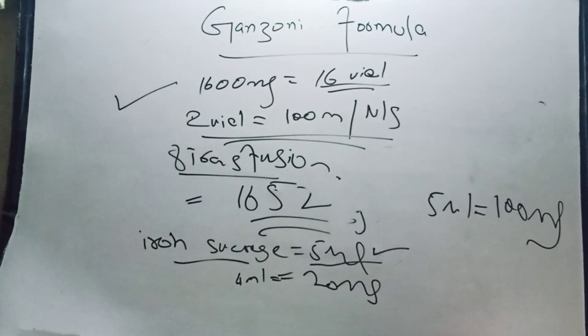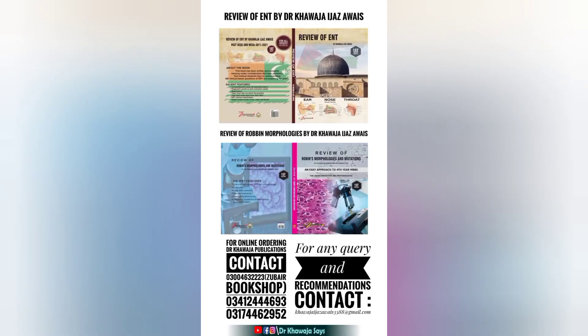If you want to purchase Dr. Kawaja publications - Review of ENT by Dr. Kawaja Jaz and Review of Rubin Morphologies by Dr. Kawaja Jaz - contact on these numbers.